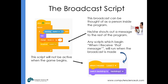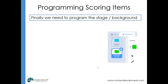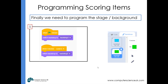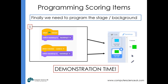The script isn't active when the game begins — it only becomes active when the broadcast 'level 2' is run. We then need to program the stage backdrops to change, and it's really simple. At the start of the game we say: when the green flag is clicked, switch backdrop to backdrop 1. Then when level 2 is received — when the key is collected — we switch backdrop to backdrop 2. And there's not a lot more to it than that.